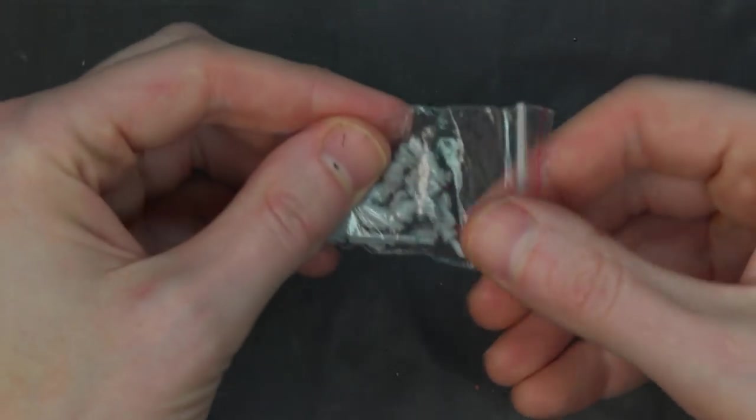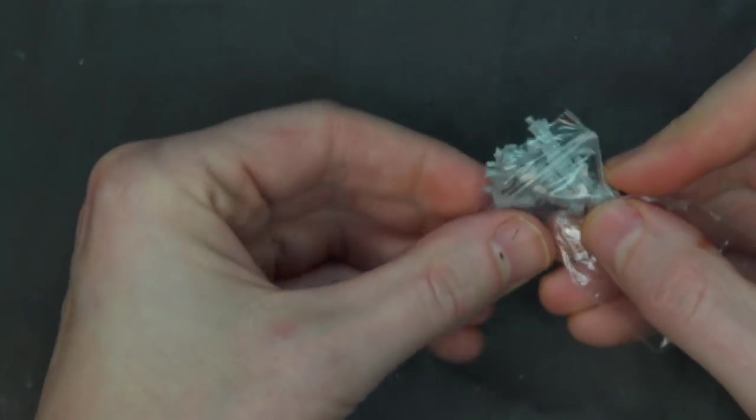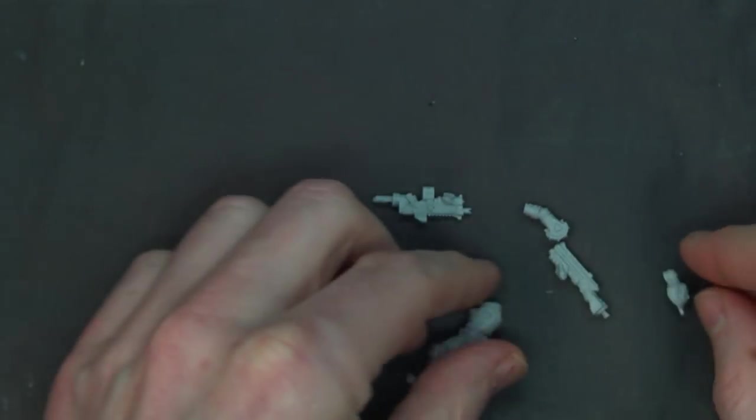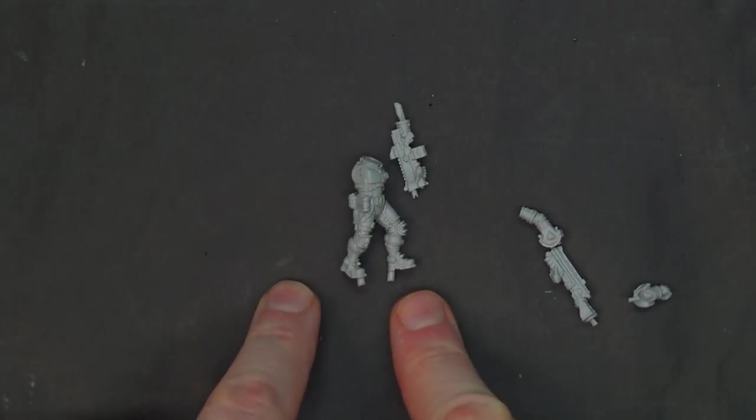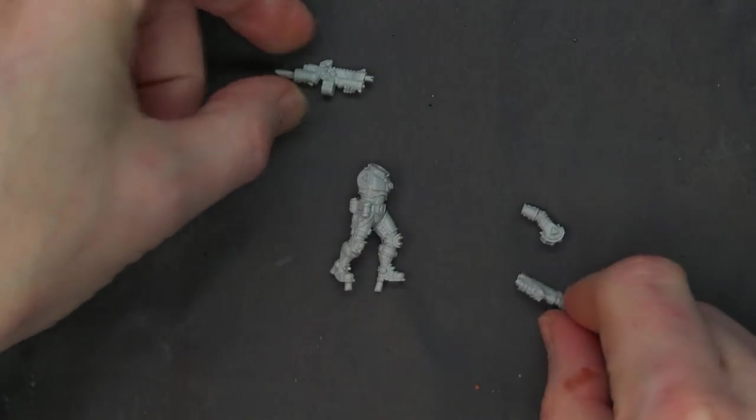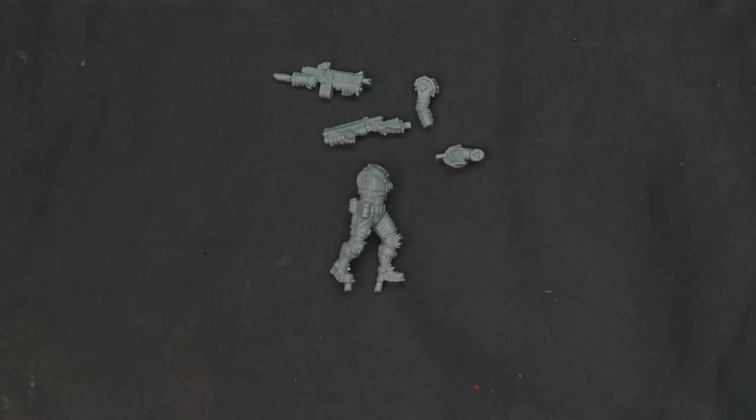Each one comes with multiple weapons. You get some sort of carbine gun as well as a shotty variant here which I think is pretty neat. But overall they're pretty easy to put together. You got your basic model body, your two different weapon options and the arms to go with them as well.